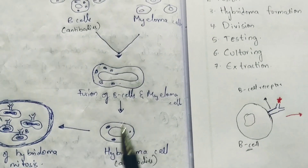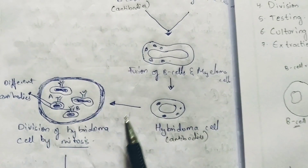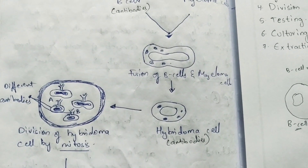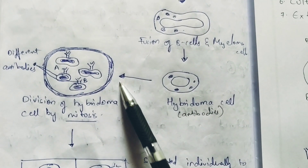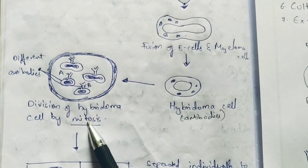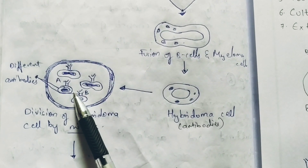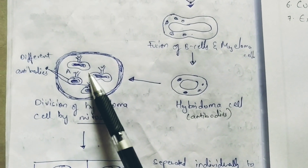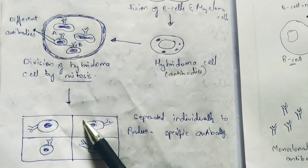Coming to the fourth step — division. The hybridoma cell, which consists of antibodies, will undergo mitotic division. When it undergoes mitotic division, several number of daughter individuals are released. Within the daughter individuals, if you zoom into a single individual, different antibodies will be present. When fusion takes place, it leads to the formation of hybridoma cells. From the hybridoma cells, when it undergoes mitosis, many monoclonals will be released out — that is, daughter individuals are released out. All of the daughter individuals will get separated individually.